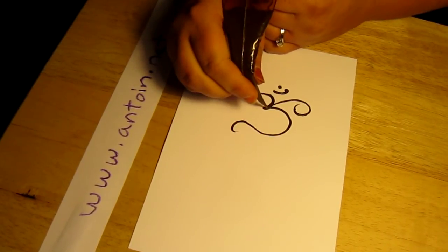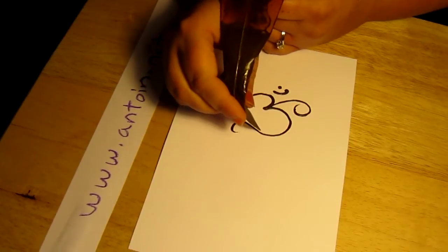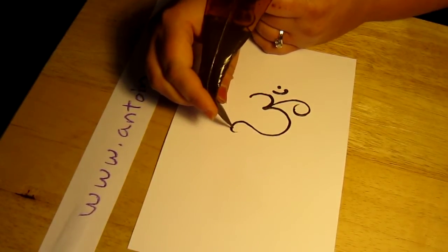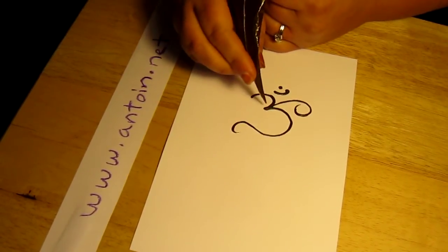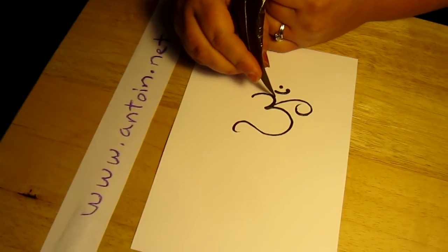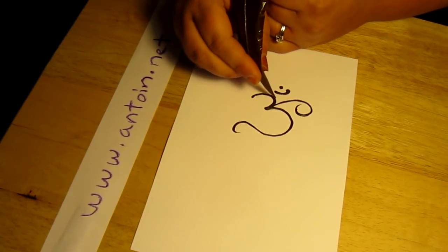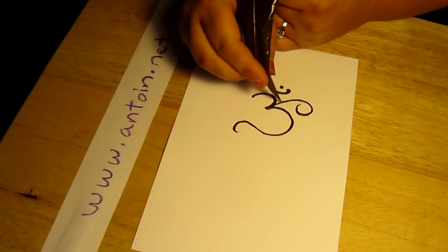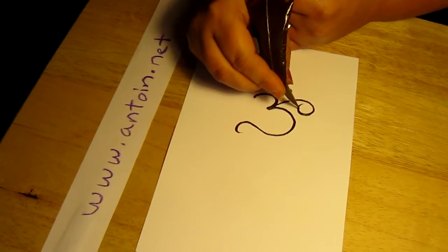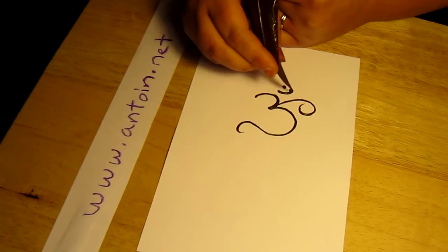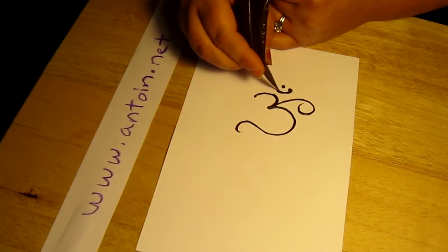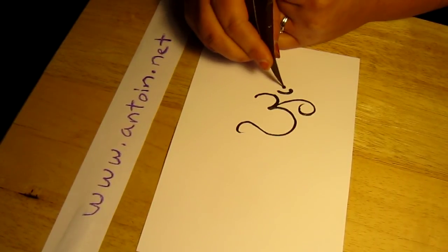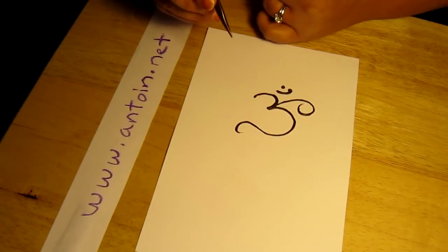So this part of the symbol, this line right here, represents the consciousness. This line right here represents the subconscious. This line represents the dream state. And this line represents the barrier to enlightenment, which is the dot up there.